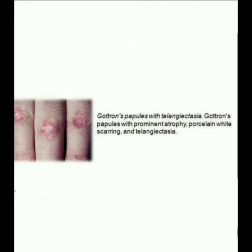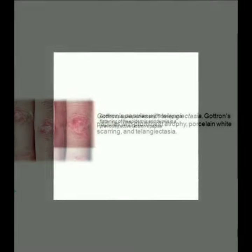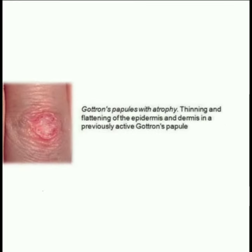This image shows Gottron's papules with telangiectasia. The next image shows Gottron's papules with prominent atrophy, porcelain-white scarring, and telangiectasia. Another image demonstrates Gottron's papules with atrophy, showing thinning and flattening of the epidermis and dermis in a previously active Gottron's papule.